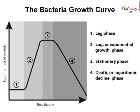During lag phase, bacteria monitor their environment and adapt themselves to growth conditions. This is the period where the individual bacteria are maturing but are not able to divide. In this phase, synthesis of RNA, enzymes, and other molecules occurs. Exponential phase, sometimes called the log phase, is a period characterized by cell doubling. The number of new bacteria appearing per unit time is proportional to the present population. If growth is not limited, doubling will continue at a constant rate, so both the number of cells and the rate of population increase doubles with each consecutive time period. Plotting the natural logarithm of cell number against time produces a straight line, and the slope of this line is the specific growth rate of the organism, which is a measure of the number of divisions per cell per unit time.